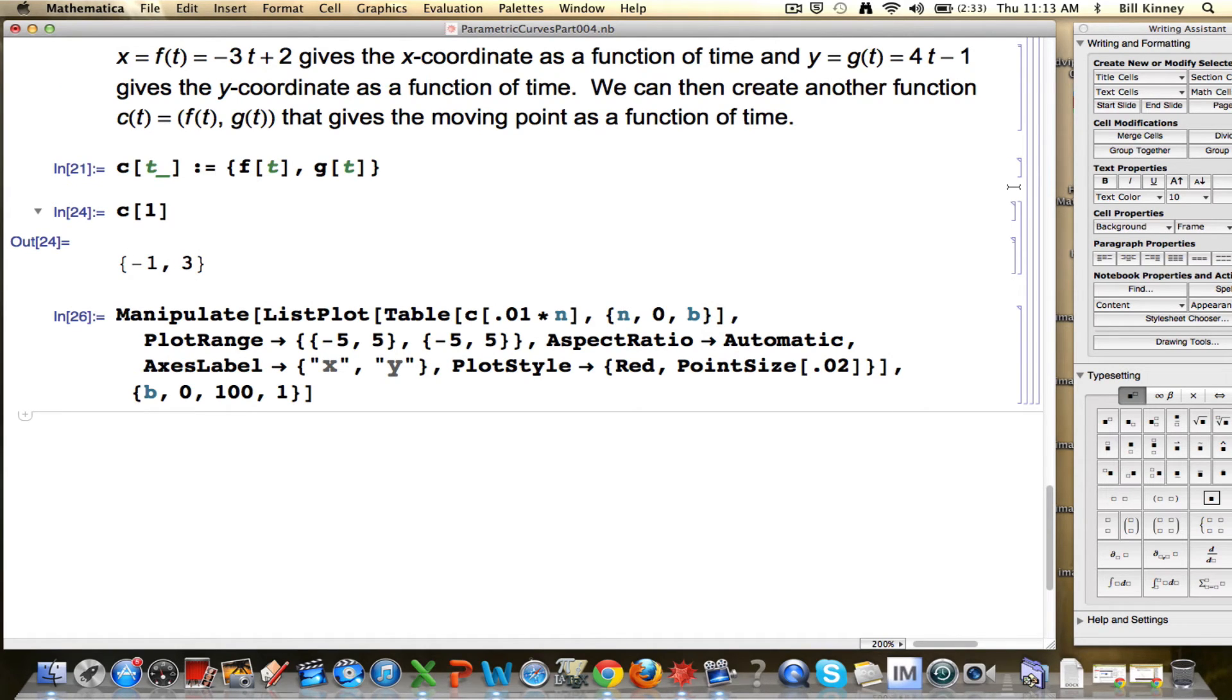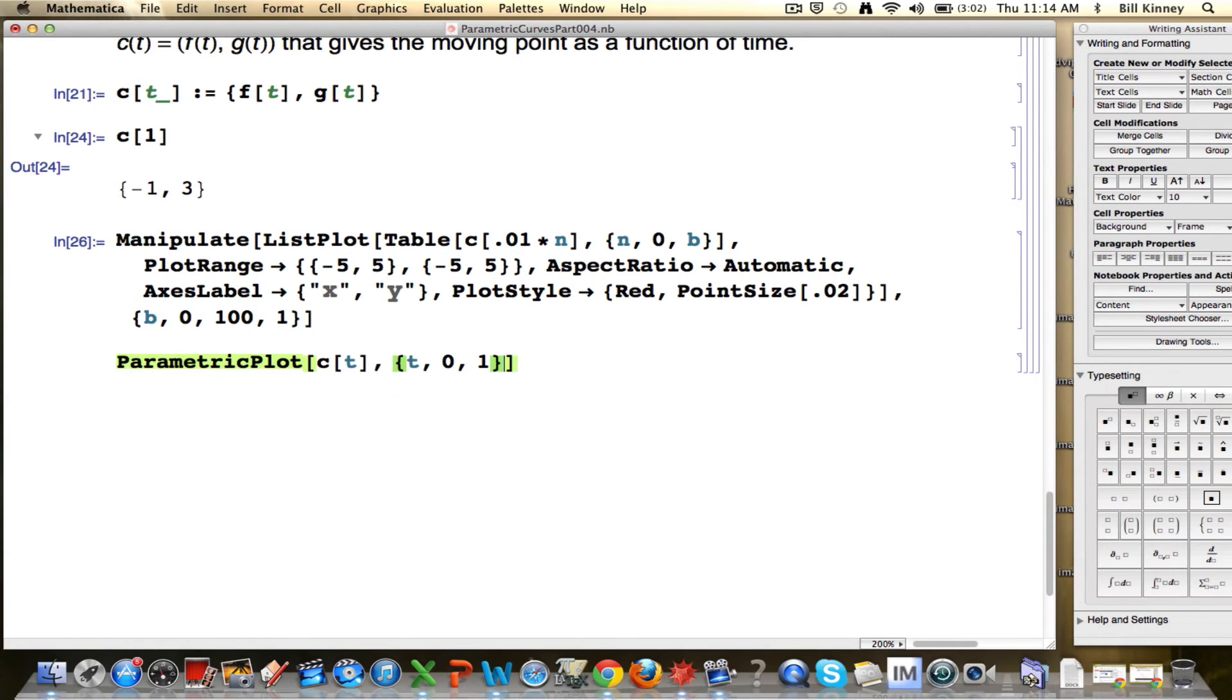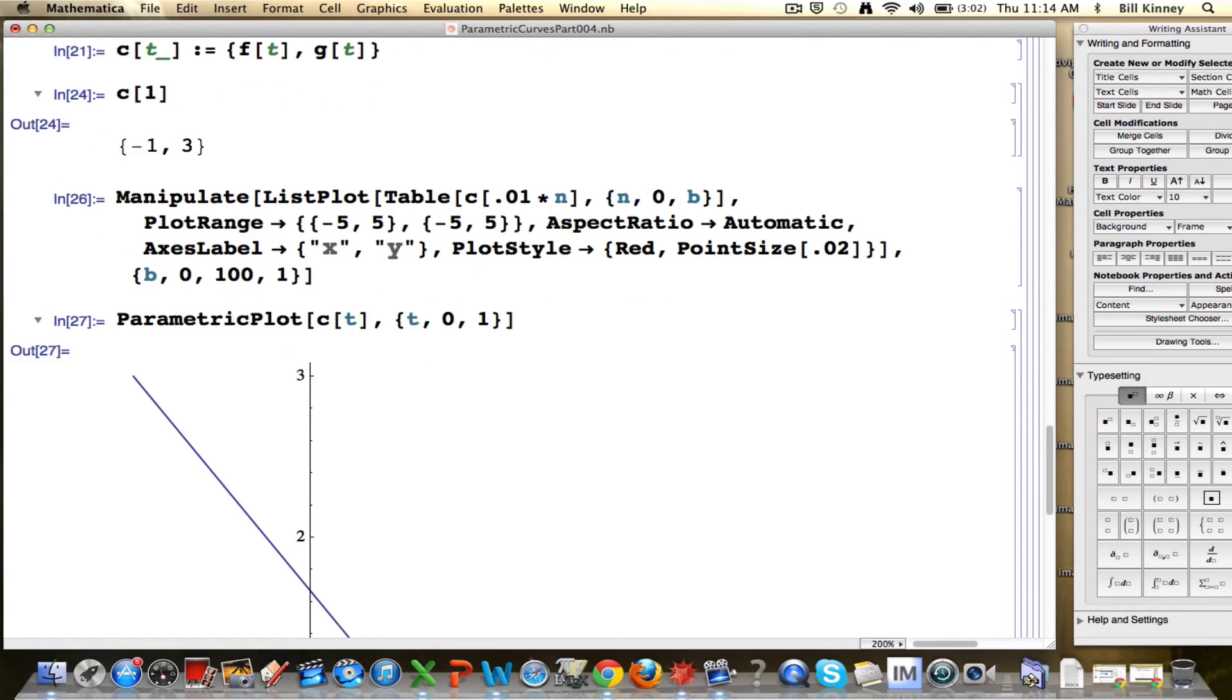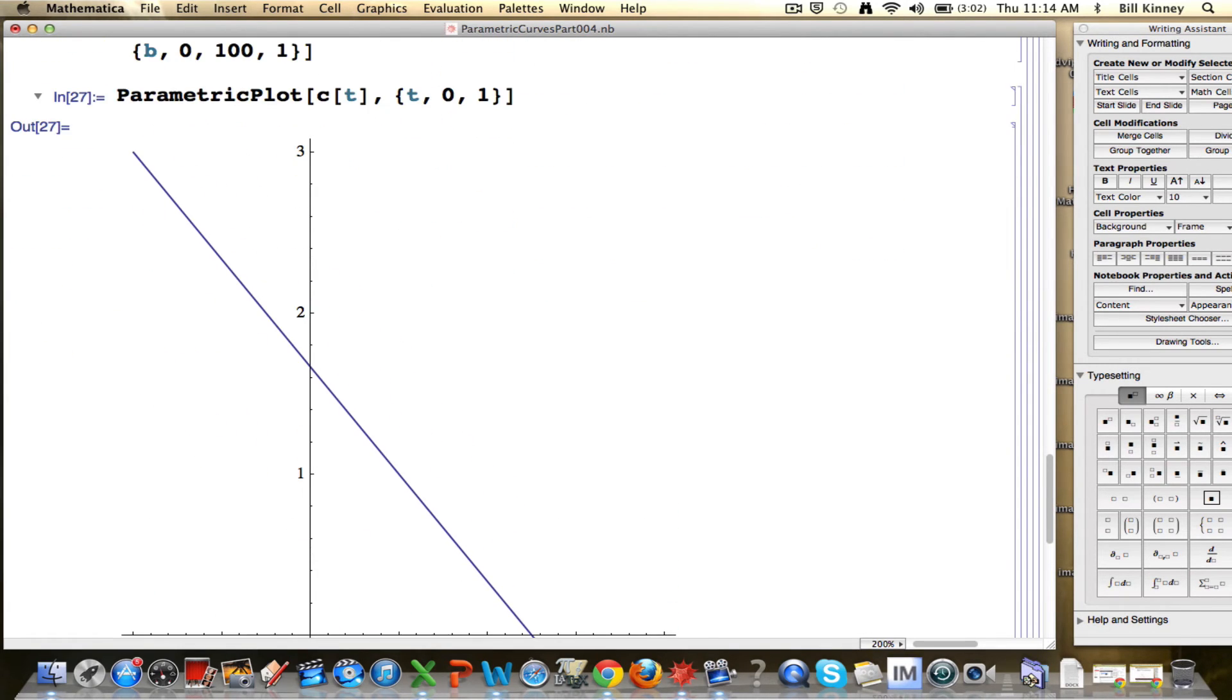Alright. Now onto parametric plot. In reality, we would never plot a parametric curve in the future in this way, by plotting a bunch of points using list plot and table. Instead, we would use something called parametric plot as the basic command to plot parametric curves. What is the parametric curve? I can type it as c[t]. I need a comma, and then I need to say what t goes between. t goes between 0 and 1. Here's how I type that. This is the syntax to get a basic plot of this parametric curve. There it is.